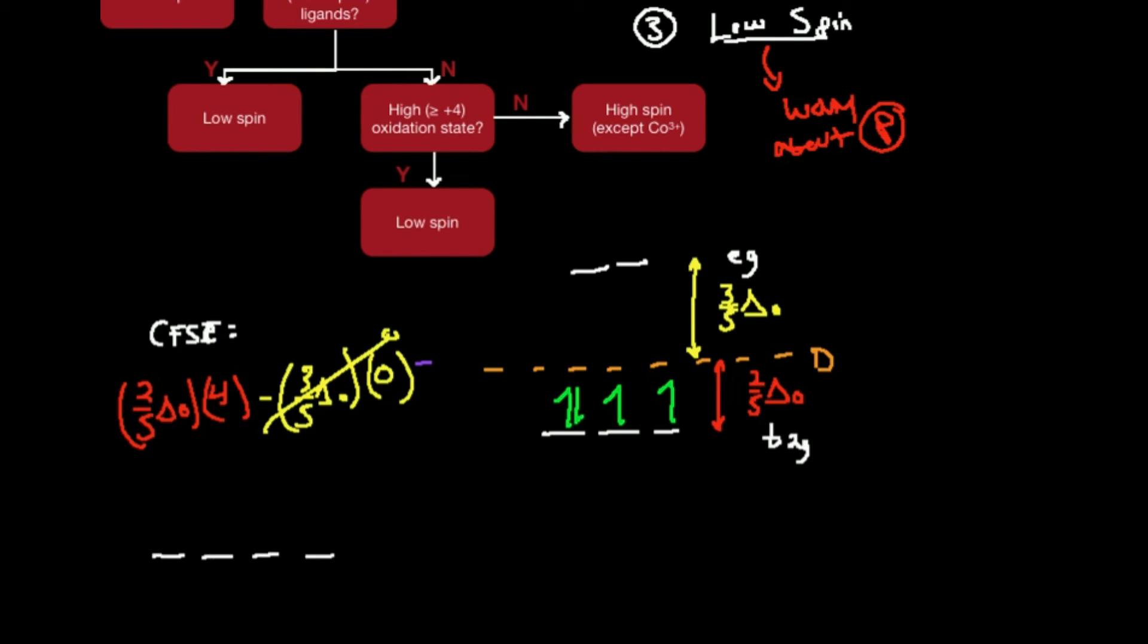To explain that I need to do one thing. Let me assume for one second that all these d orbitals are degenerate. Let me fill in these electrons like this: one, two, three, four. In the degenerate case, how many orbitals have paired electrons? Zero. In the split case, once you have crystal field splitting, how many orbitals have paired electrons? One. I'm going to take the difference in the number of orbitals that have paired electrons in the split case and subtract from the degenerate case, which is zero, and that's obviously one.